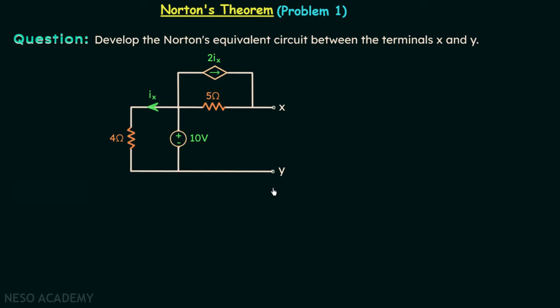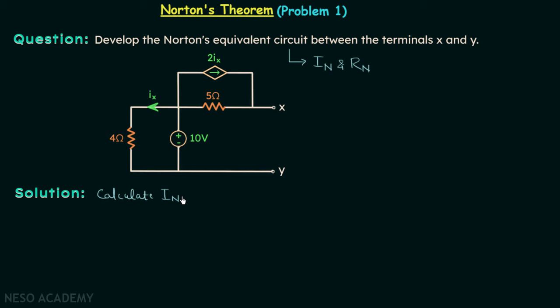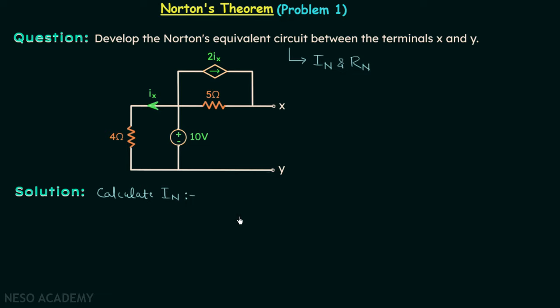When you observe the given network you will find one dependent source present. In Norton's equivalent circuit we have a current source In in parallel with resistance Rn. So to have the Norton's equivalent circuit we need In and Rn. To calculate In, we will short circuit the two terminals, and the current through the short circuit will be Norton's equivalent current In.